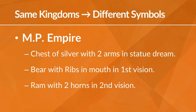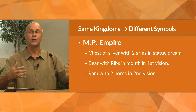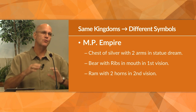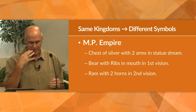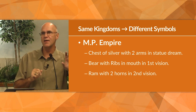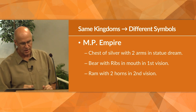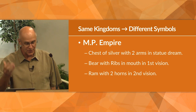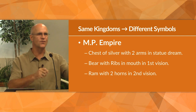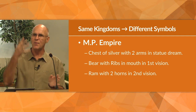For example, the Medo-Persian Empire in the king's dream is represented by a chest of silver with two arms. In Daniel's first vision, that same empire is represented by a bear with ribs in its mouth. Then in his second vision, he sees the Medo-Persian Empire again, but this time as a ram with two horns. We get confused when we try to assign these visions to different things — it's always about the same four kingdoms.